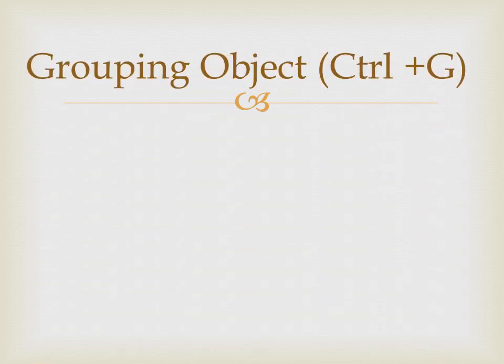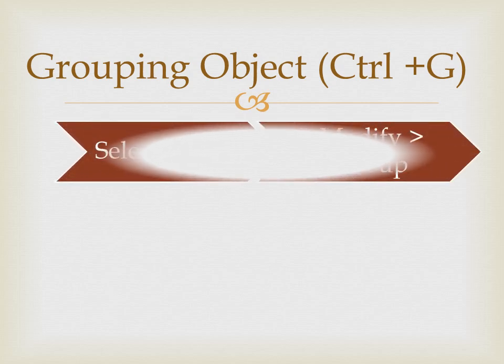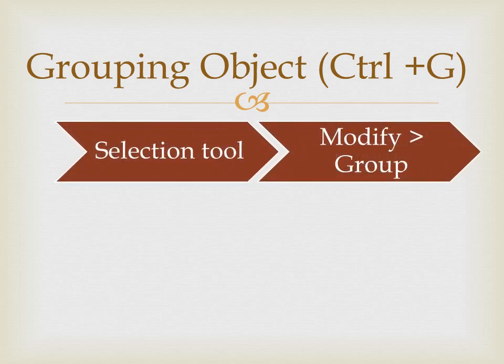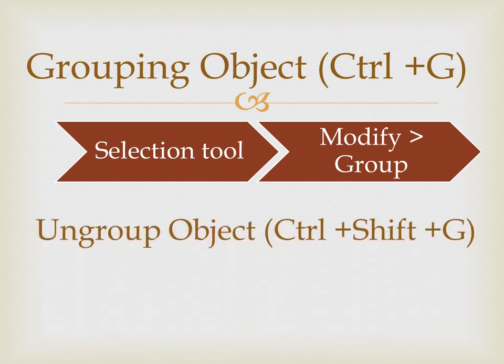The next topic is grouping objects. Grouping means to combine basic shape objects together as one. To do this, draw the shapes and select all of them using the selection tool. Then click the Modify menu and click on the Group option. You can also use the shortcut key Ctrl+G.